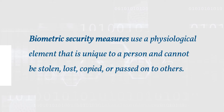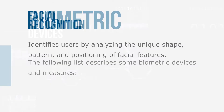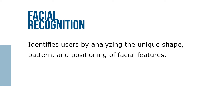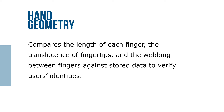Biometric security measures use physiological elements that are unique to a person and cannot be stolen. Some biometric devices and measures include: facial recognition, which identifies users by analyzing the unique shape, pattern, and positioning of facial features; fingerprint scanning, which verifies a user's fingerprint against prints stored in a database; and hand geometry, which compares the length of each finger, the translucence of fingertips, and the webbing between fingers against stored data to verify users' identities.